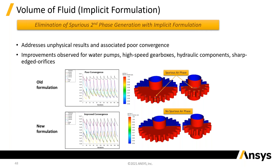However, poor convergence leads to spurious regions of one phase in the other. Here's a gear pump — imagine it's spinning round, immersed in oil with gas above and oil below. All of a sudden you've got spurious little knobs of air building up that are not there because of any physical effect, but because of bad numerics. Improvements to this formulation get rid of those, giving better convergence, particularly for continuity — a significant improvement.